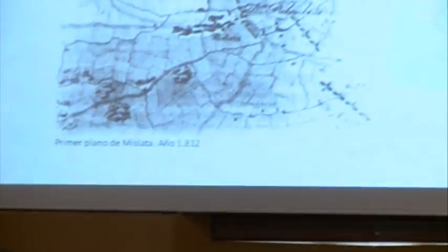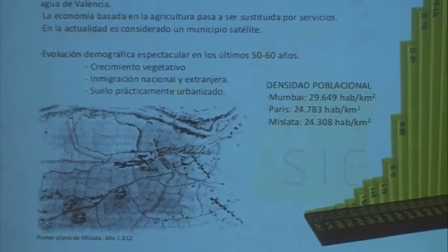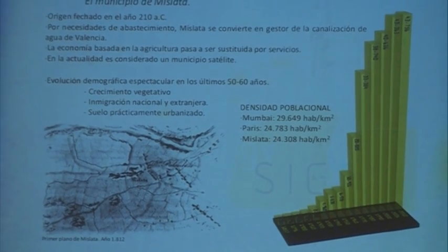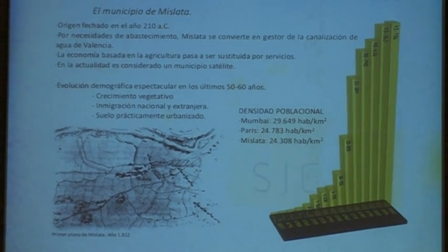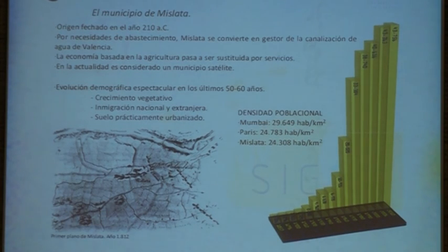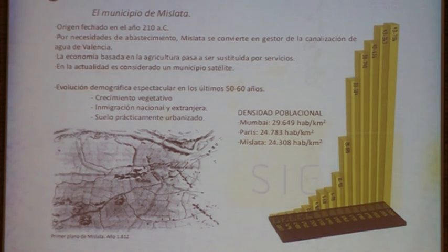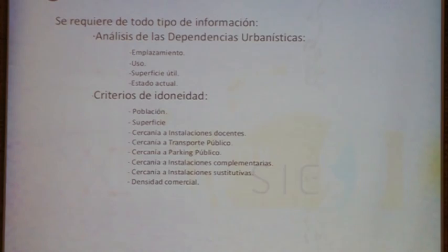Let me give you a few data on the context, on the setting. Mislata is a suburban town very close to Valencia. It is very, very densely populated. The area is very small for the population it caters for. In fact, it is the most densely populated town in Spain, because the town only has two square kilometers.